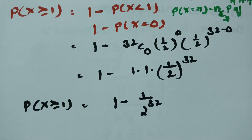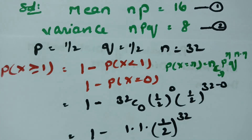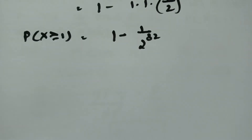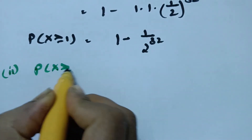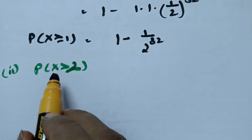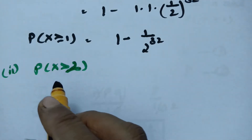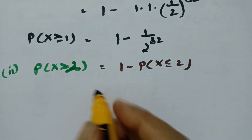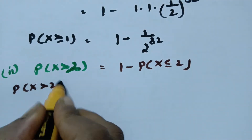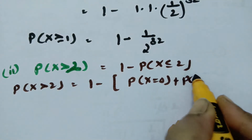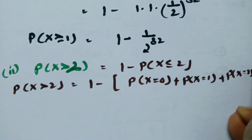For the second question, we find the probability of x greater than 2. Rather than summing from 3 to 32, I write this as 1 minus probability of x less than or equal to 2, which equals 1 minus [P(x=0) plus P(x=1) plus P(x=2)].